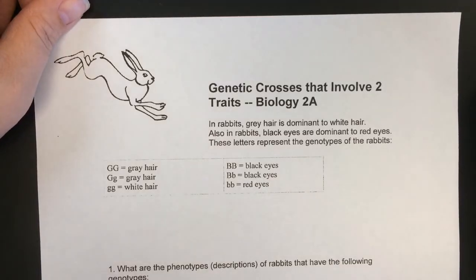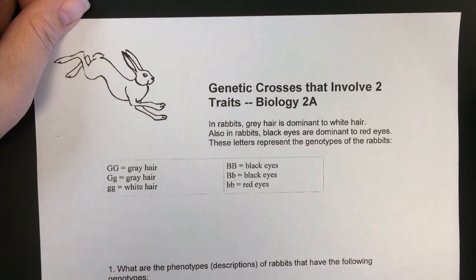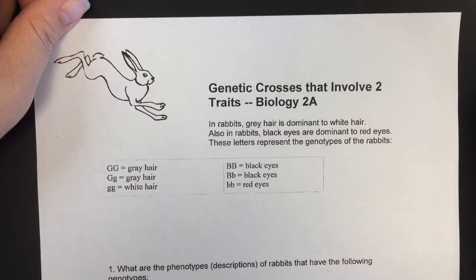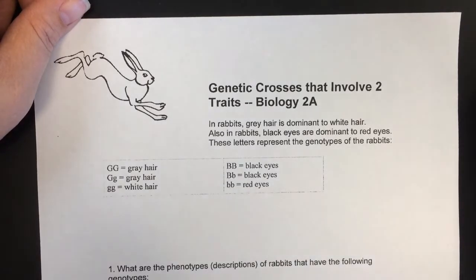Genetic crosses that involve two traits — biology 2a. In this we're going to look at when an organism inherits two traits that are located on separate chromosomes, what we call unlinked traits. If you get into linked traits it gets a little more complicated, so we're just going to go with this for right now.